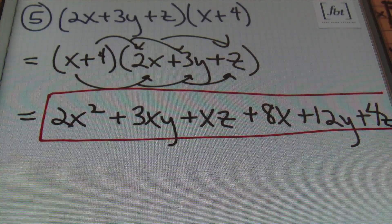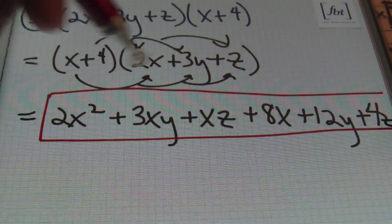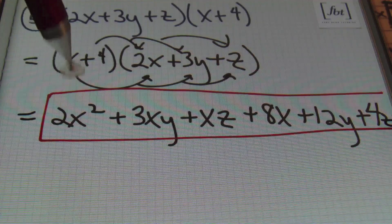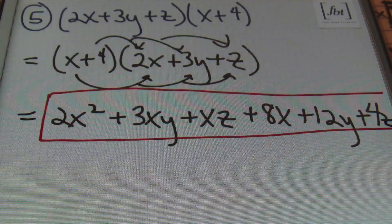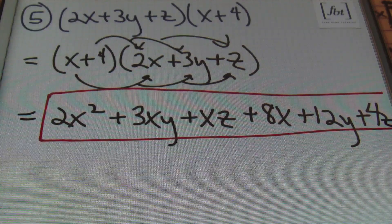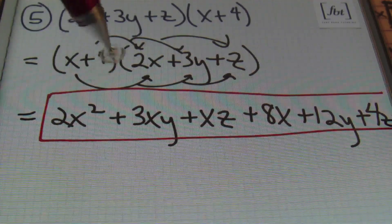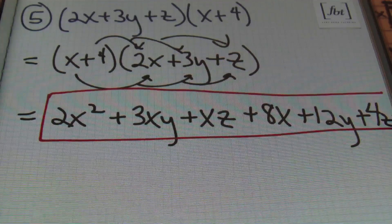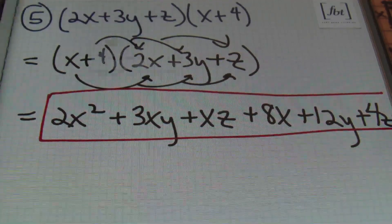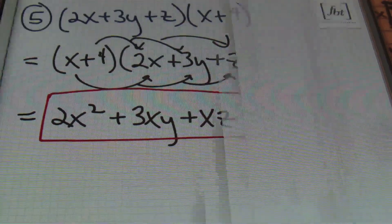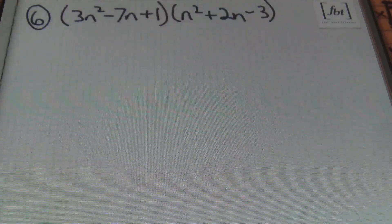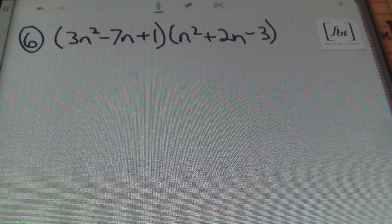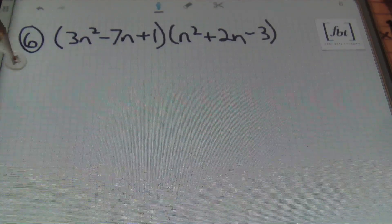Ladies and gentlemen, don't get too bogged down by the order the terms should be in when you have multiple variables — as long as you have all the terms together, you'll be fine. That's problem number 5 done and done. Next we have problem number 6: a trinomial times a trinomial — that's a first for us today.